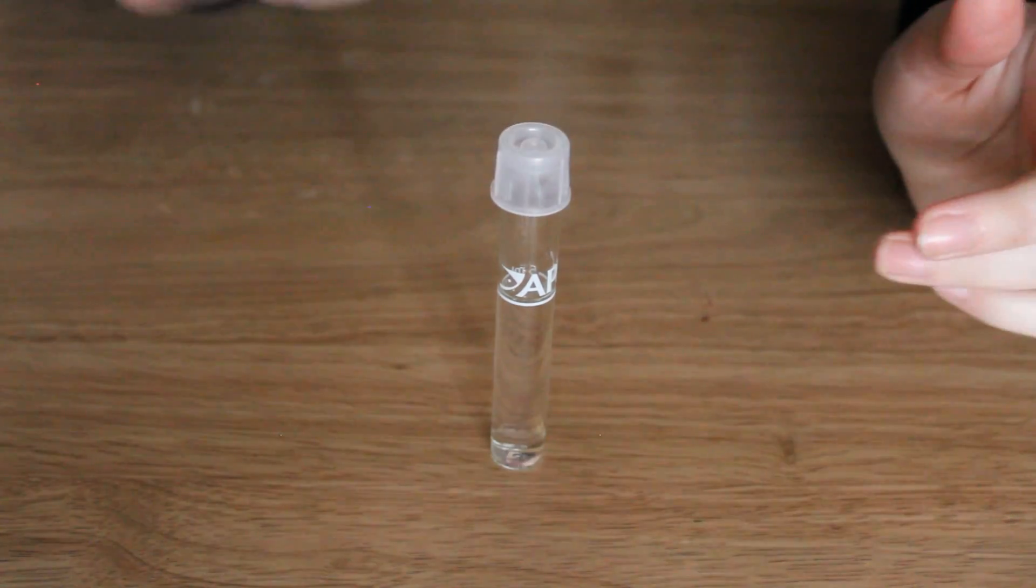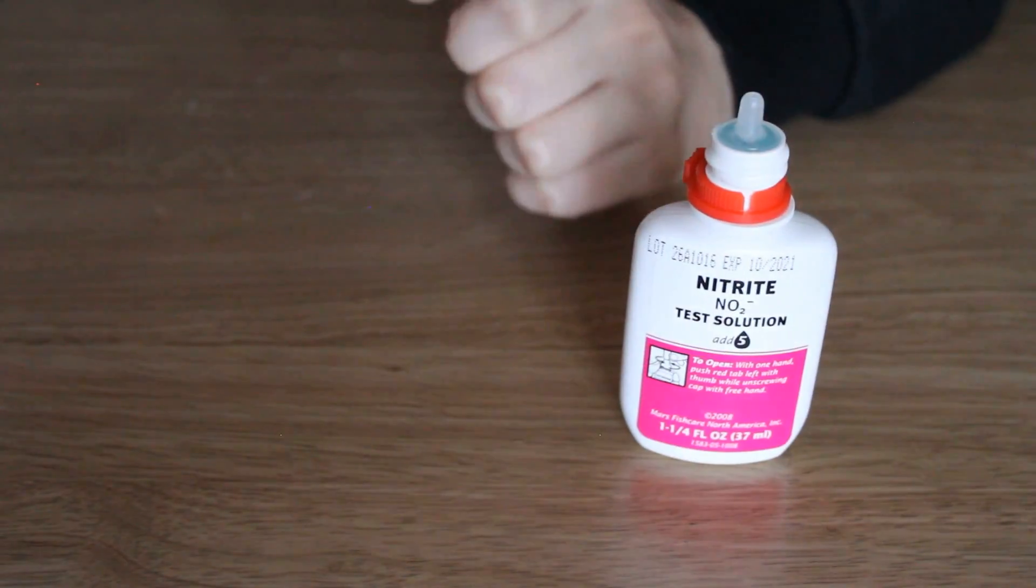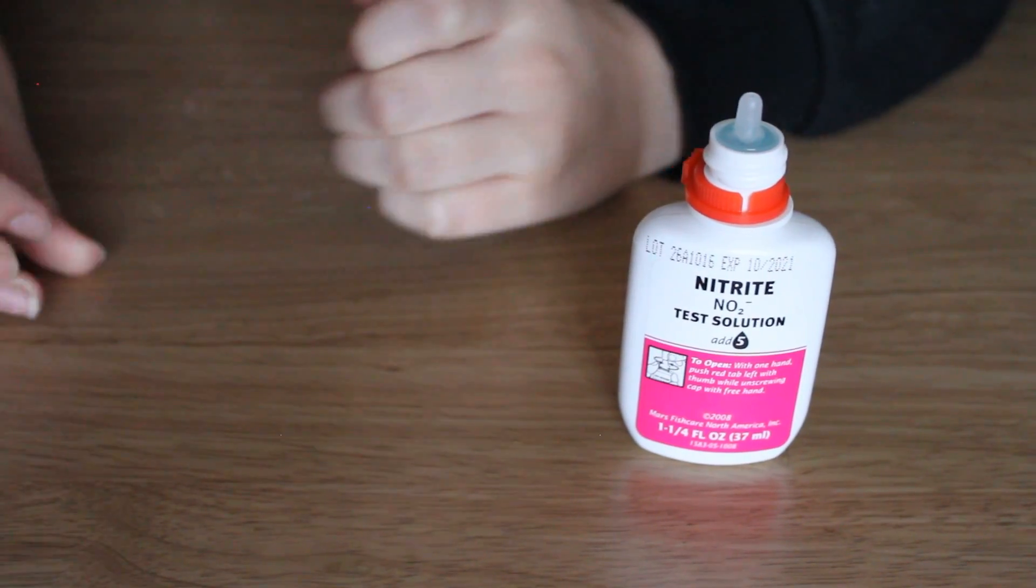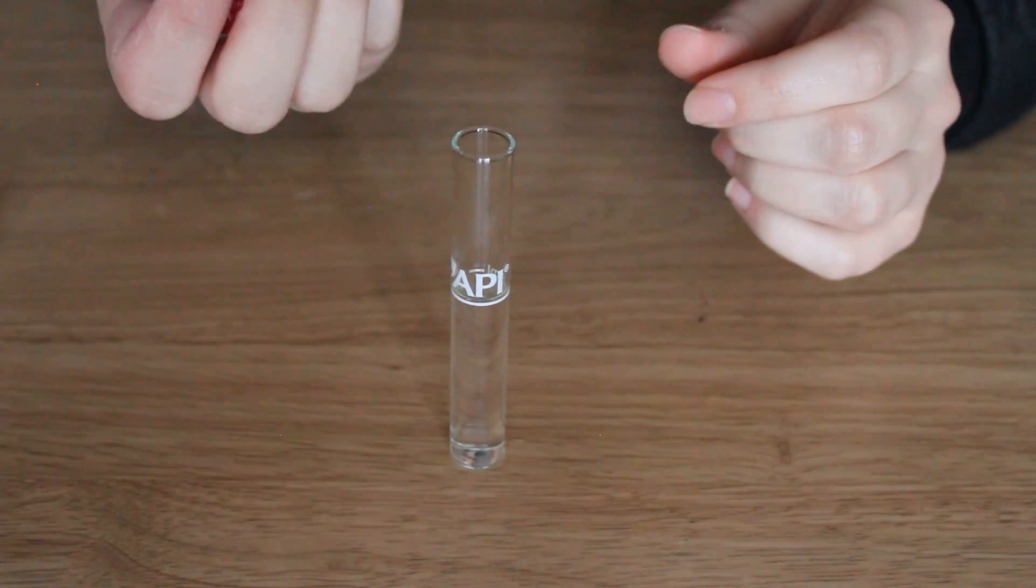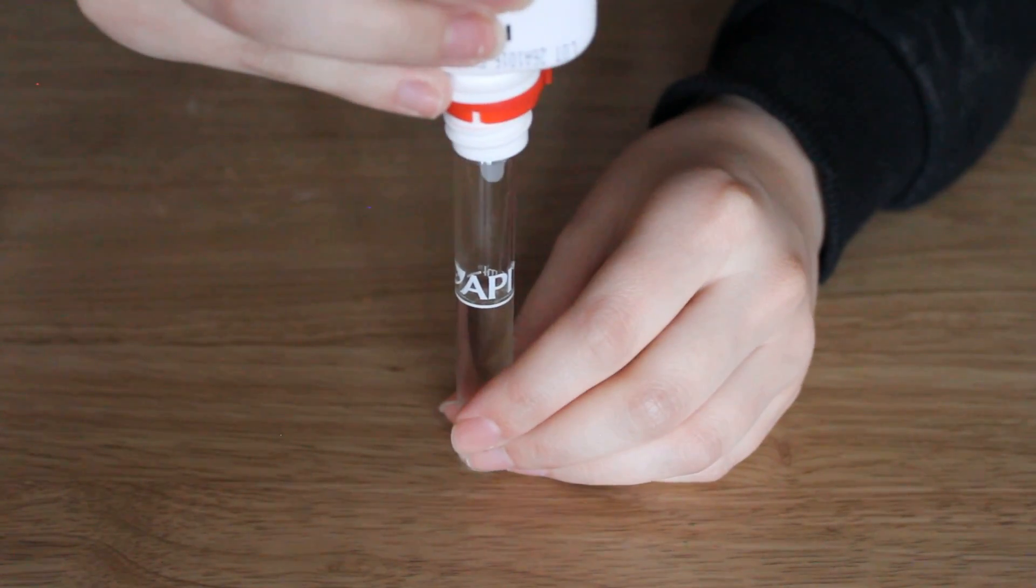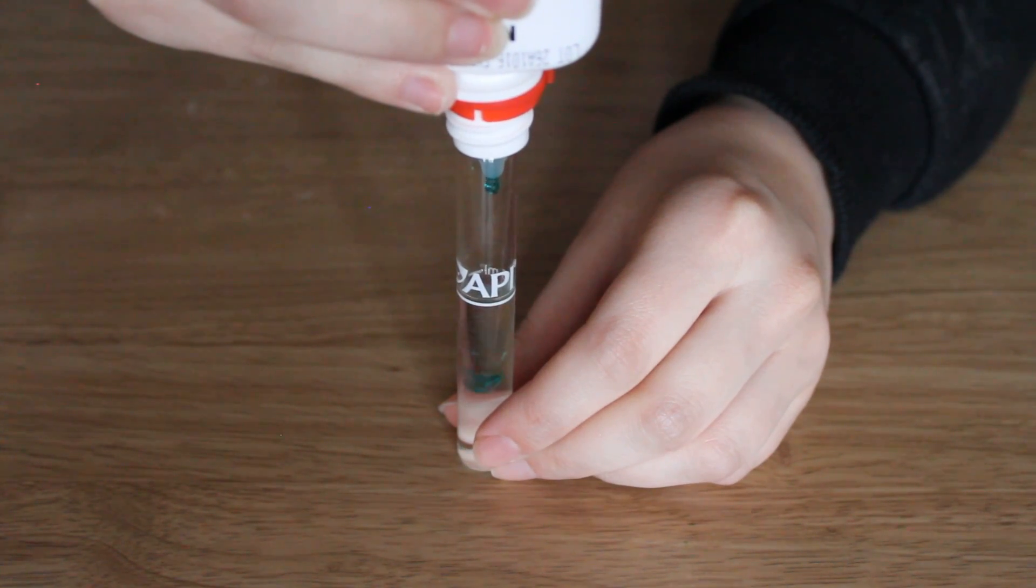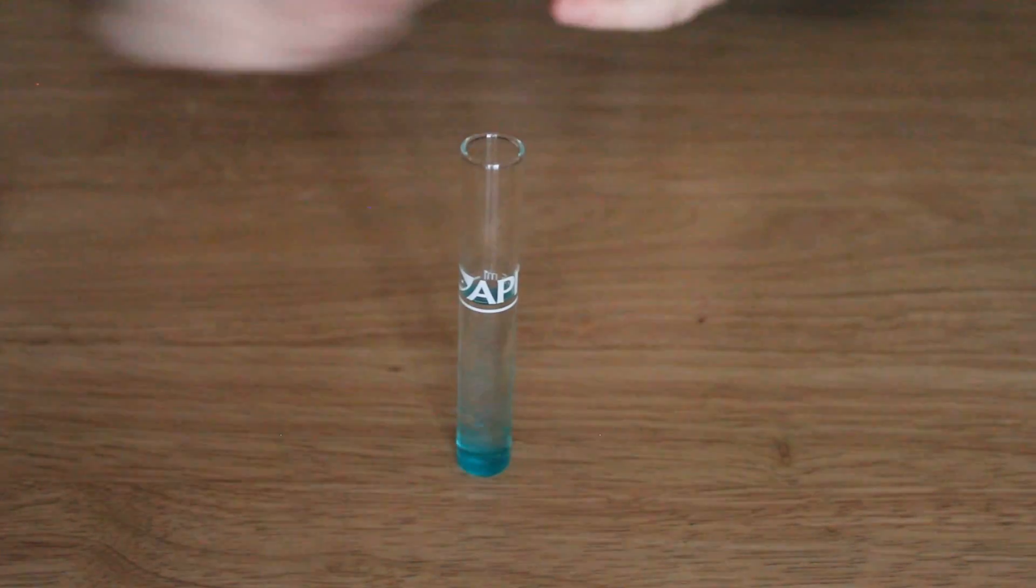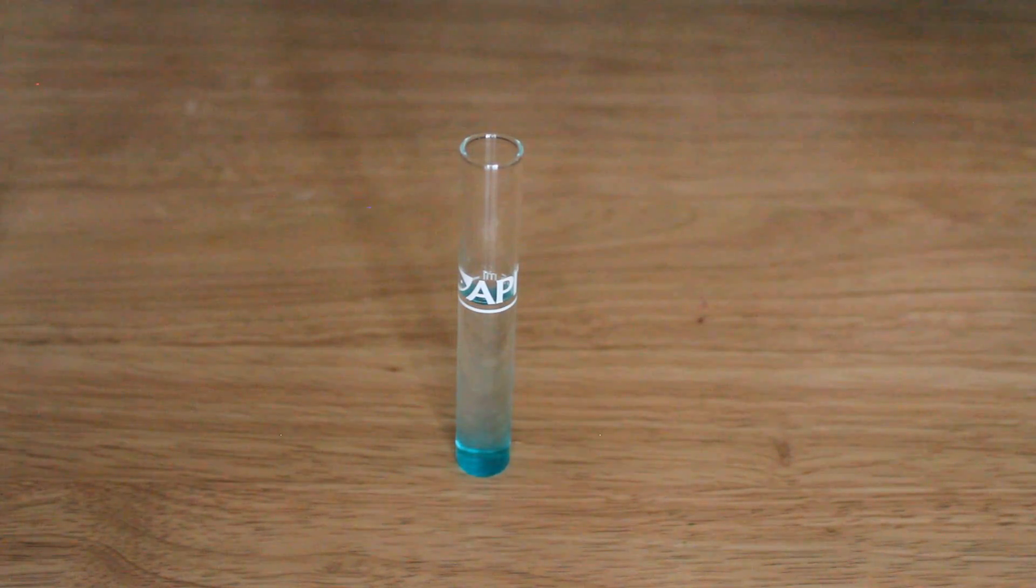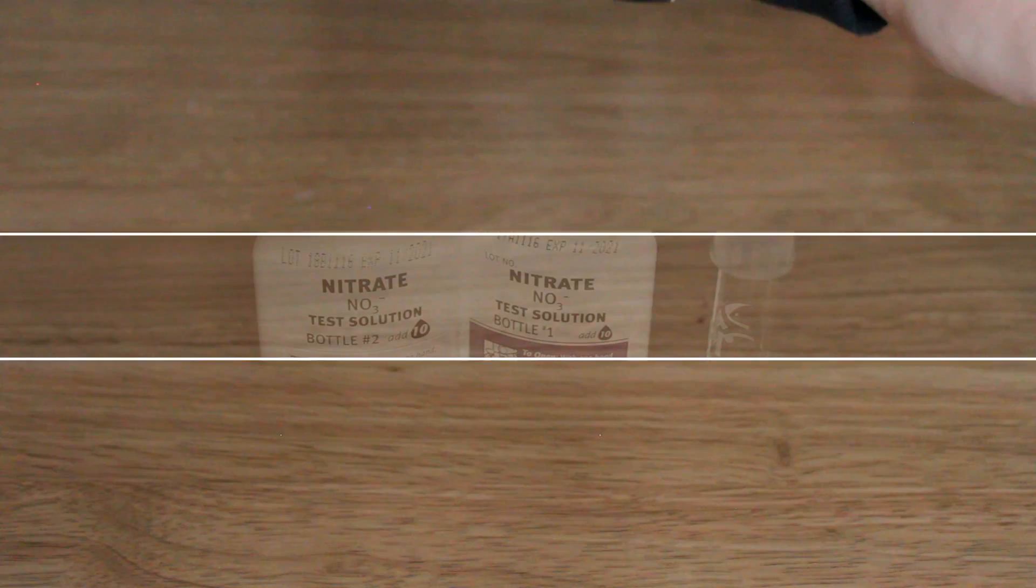Most of these bottles you need to shake before you use and we're going to add five drops of this. One, two, three, four, five. Put the lid on and then we're going to mix it up. Oh and it's leaked. We're going to just leave it to settle for a little bit.